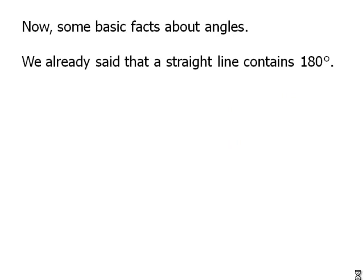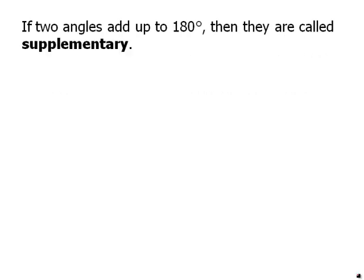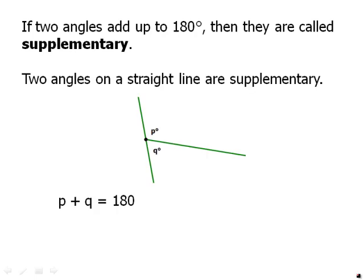Now some basic facts about angles. We've already said that a straight line contains 180 degrees. This means that if two or more angles lie in a straight line, the sum of their angles is 180 degrees. So for example, we can assume that that long line is straight. It doesn't have some kind of slight bend at that point. The test will not do that to us. If it looks straight, it is straight. And therefore we know that those two angles together make 180. So x plus y equals 180. If the two angles add up to 180, then they are called supplementary. Two angles on a straight line are always supplementary. So p plus q equals 180.